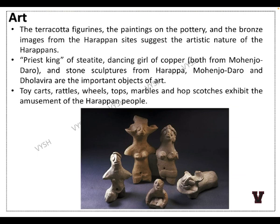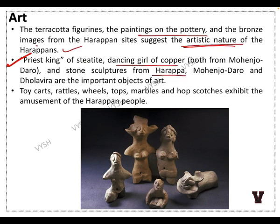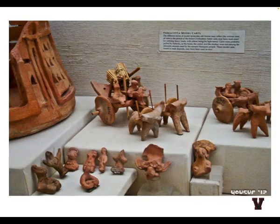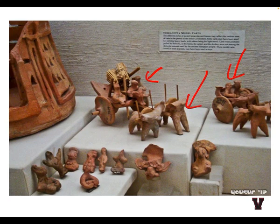Terracotta figurines, pottery paintings, and bronze images from Harappan sites show the artistic nature of the Harappans. Important art objects include the Priest-King of steatite and the Dancing Girl of copper, both from Mohenjo-daro, and stone sculptures from Harappa, Mohenjo-daro, and Dholavira. Toy carts, rattles, wheels, tops, marbles, and hopscotches show the amusements of Harappan people. The terracotta toys include a cart pulled by an ox with solid round wheels.